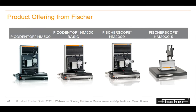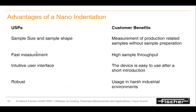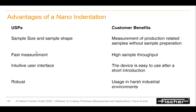Nano indentation products include the Pico Indenter and Pico Indenter Basic for R&D and research purposes, with an option to attach an AFM for better imaging of the indentation. The HM2000 is more suited for the paint industry to find physical and hardness properties of paint, and for bulk material where a reference hardness value of coatings is needed. The device is easy to use after short training and is designed for harsh environments.